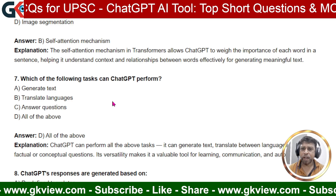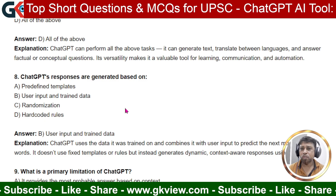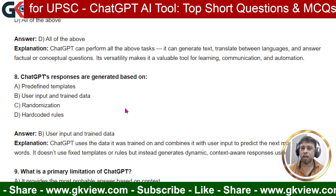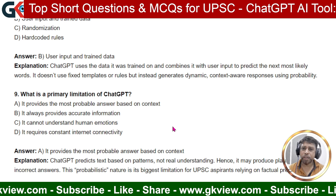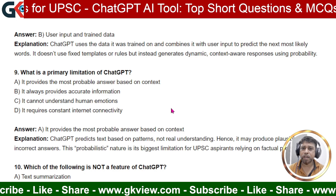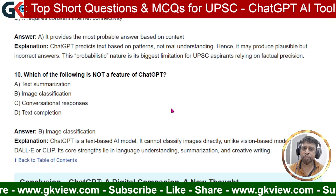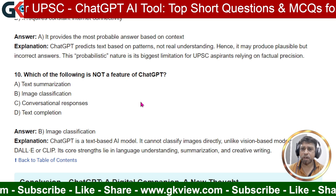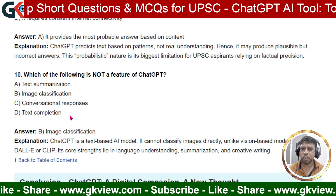Question 8: ChatGPT's responses are generated based on? The answer is B — user input and trained data. User input means our questions and prompts; trained data means data already fed into the system. Question 9: What is a primary limitation of ChatGPT? The answer is A — it provides the most probable answer based on context, not a 100% perfect answer. Question 10: Which of the following is NOT a feature of ChatGPT? Text summarization, conversational response, and text completion are all features. The answer is B — image classification is not a feature of ChatGPT.